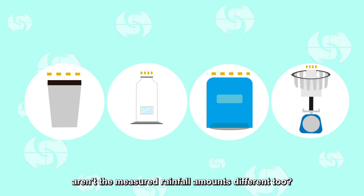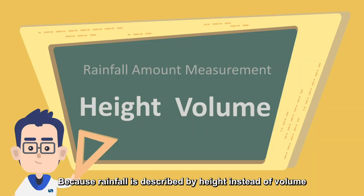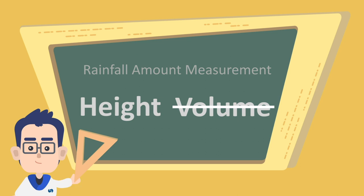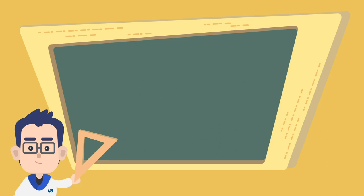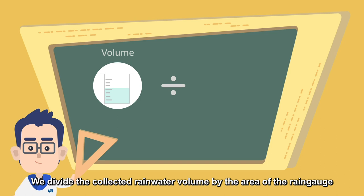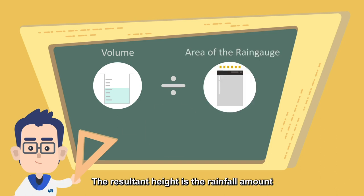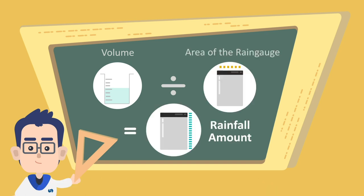Even though the diameters are different, the measured rainfall amounts are not different, because rainfall is described by height instead of volume. We divide the collected rainwater volume by the area of the rain gauge, and the resultant height is the rainfall amount.